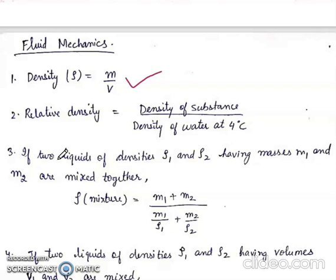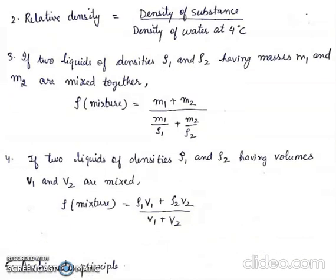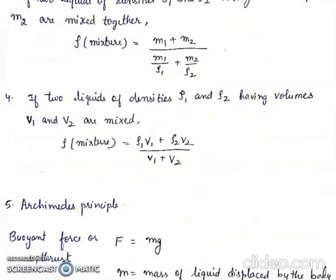If two liquids of density rho 1 and rho 2 having masses m1 and m2 are mixed together, then rho mixture will be m1 plus m2 upon m1 by rho 1 plus m2 by rho 2. If two liquids of densities rho 1 and rho 2 having volumes v1 and v2 are mixed, then rho mixture is equal to rho 1 v1 plus rho 2 v2 upon v1 plus v2.